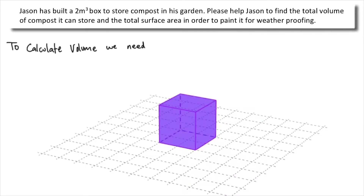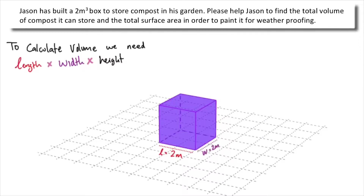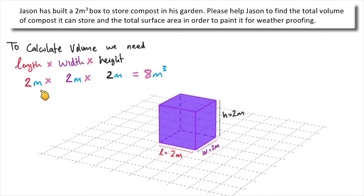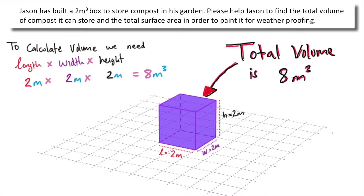In order to find the volume we need the length, the width and the height of this cube. Since it's a 2-meter cube, the length is 2 meters, the width is 2 meters and the height is 2 meters. 2 meters times 2 meters times 2 meters gives us 8 meters cubed. Note that m × m × m gives us m cubed, so the total volume is 8 cubic meters.